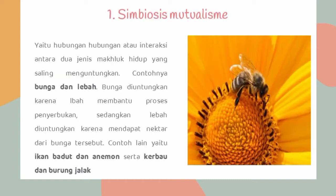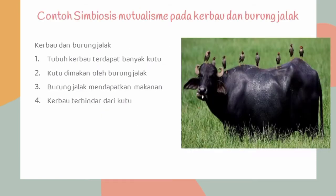Yang pertama, simbiosis mutualisme, yaitu hubungan atau interaksi antara dua jenis makhluk hidup yang saling menguntungkan. Contohnya adalah bunga dan lebah. Bunga diuntungkan karena lebah membantu proses penyerbukan, sedangkan lebah diuntungkan karena mendapat nektar dari bunga tersebut. Contoh lain yaitu ikan badut dan anemon, serta kerbau dan burung jalak. Pada kerbau dan burung jalak: tubuh kerbau terdapat banyak kutu, kutu dimakan oleh burung jalak, sehingga burung jalak mendapatkan makanan dan kerbau terhindar dari kutu.